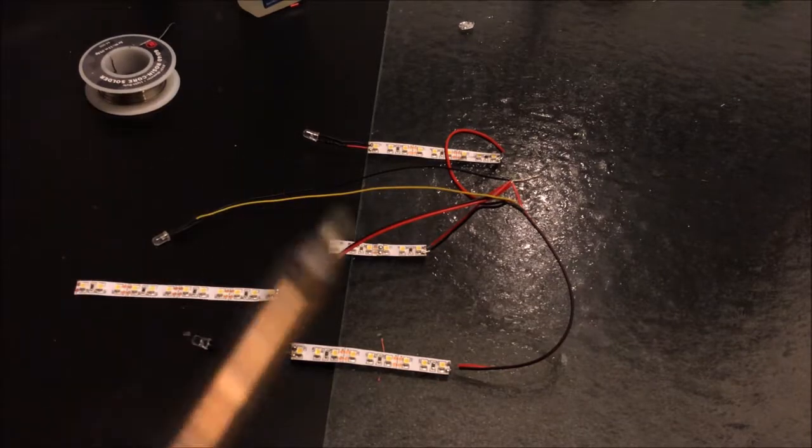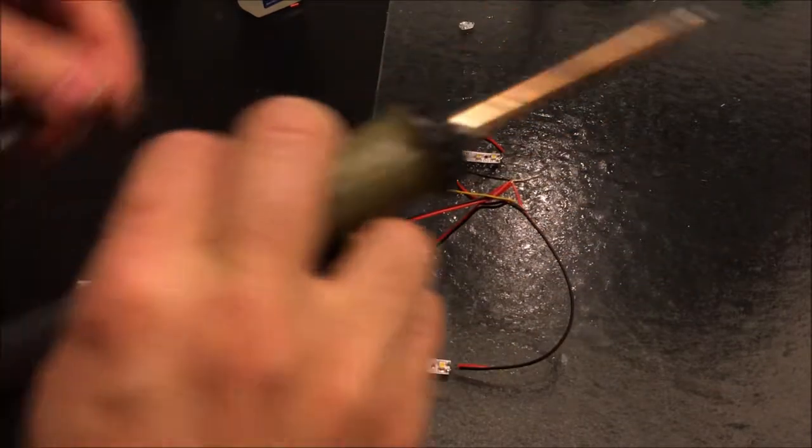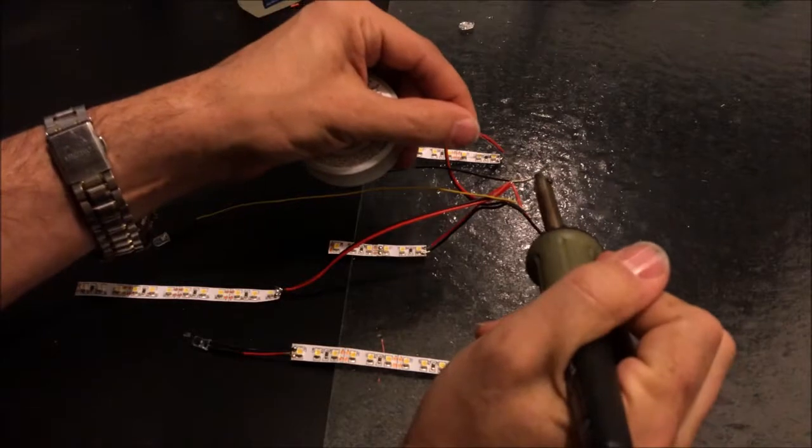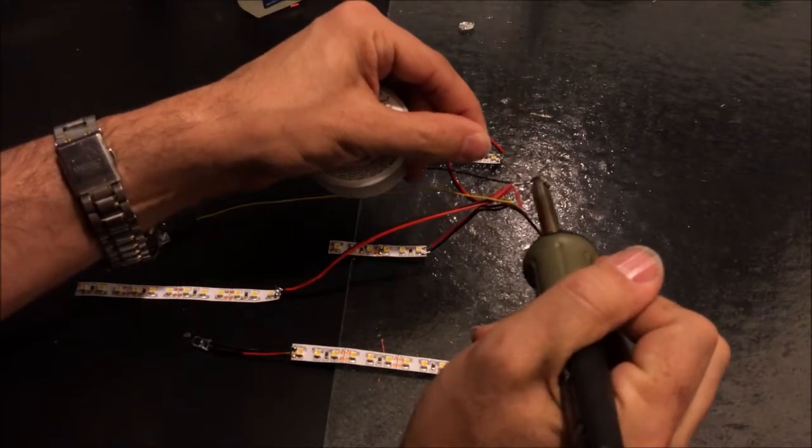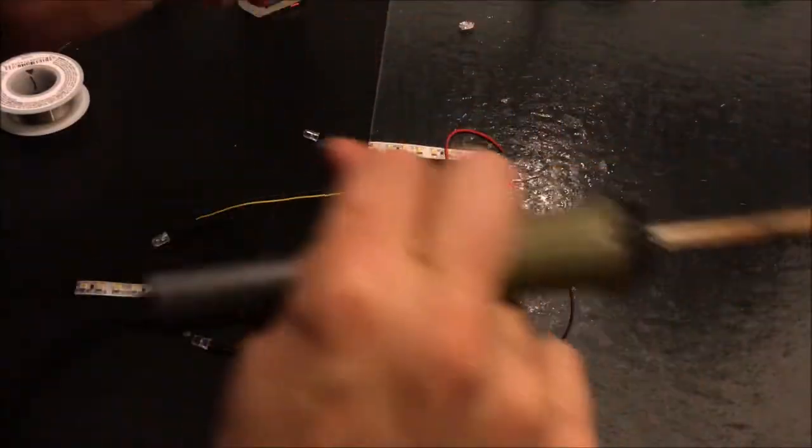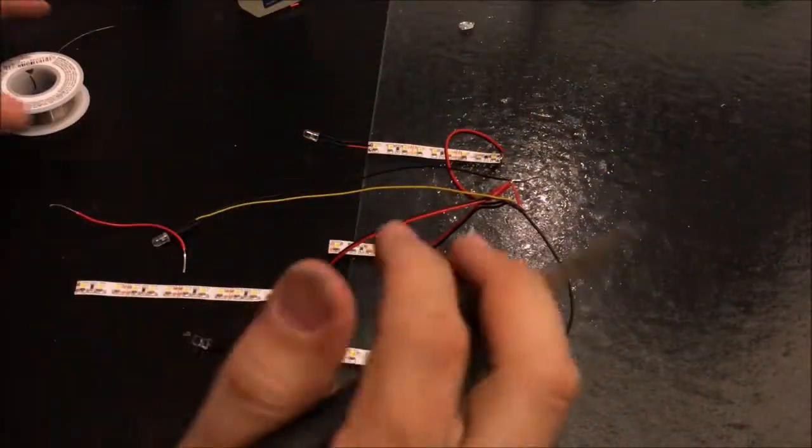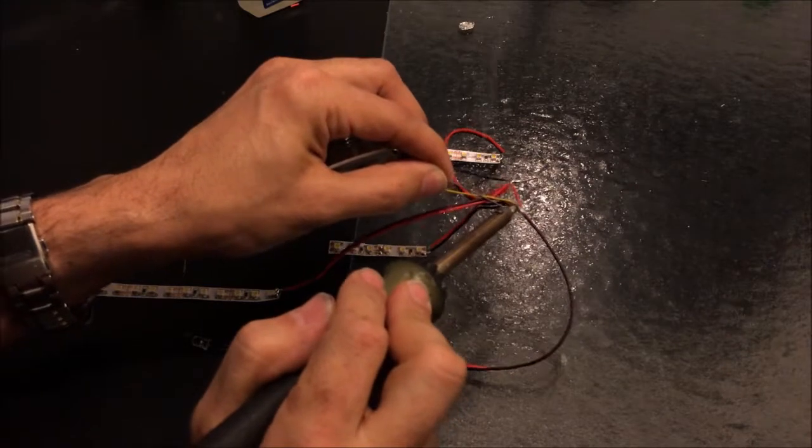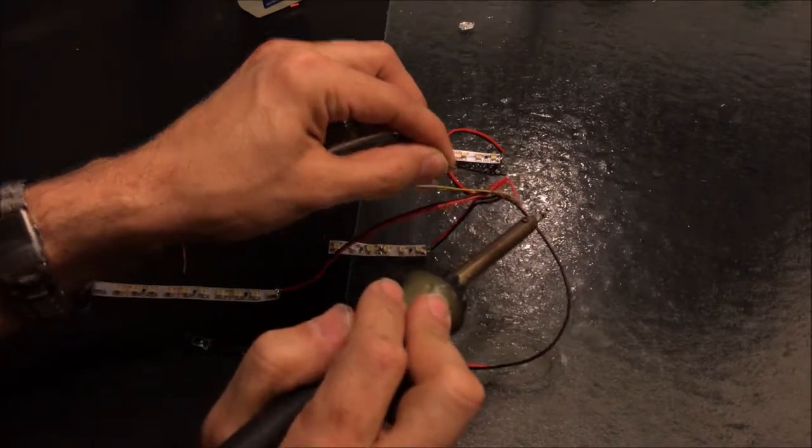Then we're going to take it and we're going to solder a power connection onto this. So, this is going to be all of our positive leads have been put together into one place. We're going to run it to a new wire. And this is all of our negative leads run into one place.